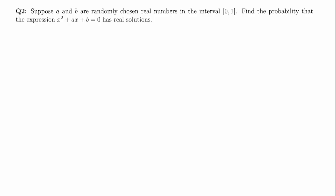For number two, we have a and b chosen randomly from the interval zero to one, and we want to find the probability that the expression x² + ax + b = 0 has real solutions. Have a think and I'll give you the answer right away.